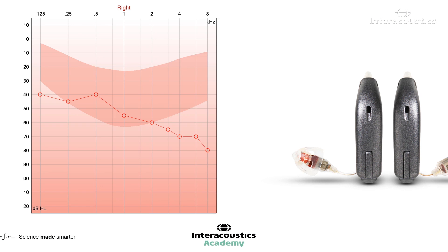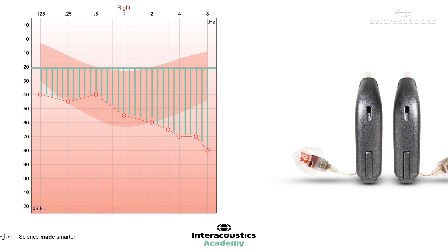When we fit a hearing aid, what we're really trying to do is attempt to overcome hearing loss. We've got our normal hearing range and an audiogram on the screen that shows a mild to severe sloping hearing loss in the high frequencies. What we're really trying to do with a hearing aid is restore this hearing loss to as close to normal hearing as possible. Obviously a hearing aid is only an aid, and the likelihood of restoring fully natural hearing is restricted, but this is what we're aiming for.